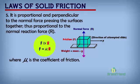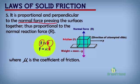Number five: the law of solid friction states that the frictional force is proportional and perpendicular to the normal force pressing the surfaces together. We have a mathematical expression here: the frictional force is proportional to the normal reaction force acting between or pressing the surfaces together. And when we remove the proportionality sign, we will have a constant — this constant of proportionality, mu, is called the coefficient of friction.